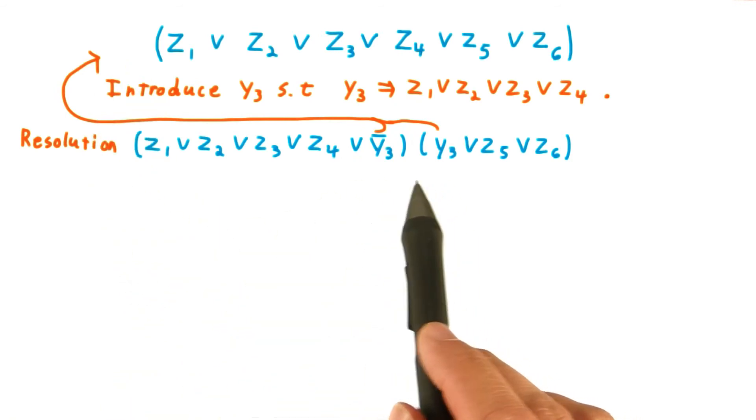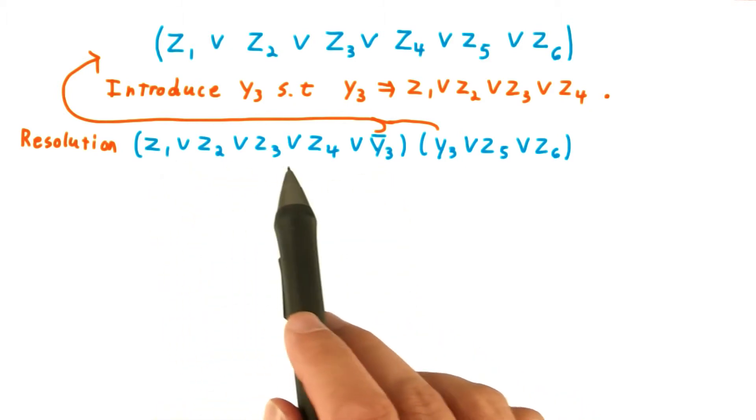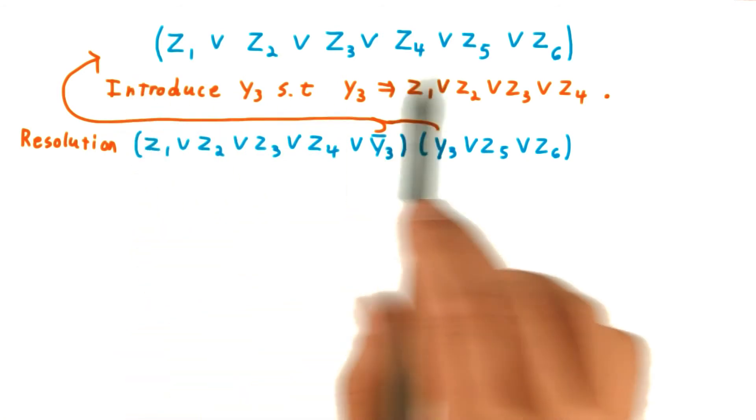If Y3 is true, then Y3 bar is false, and so one of the Z1 through Z4 must be true, and so must the original clause.